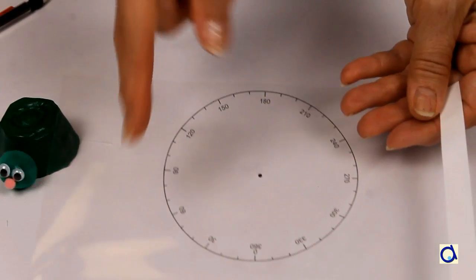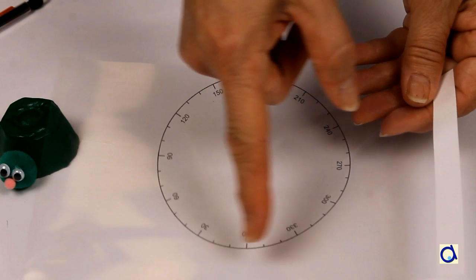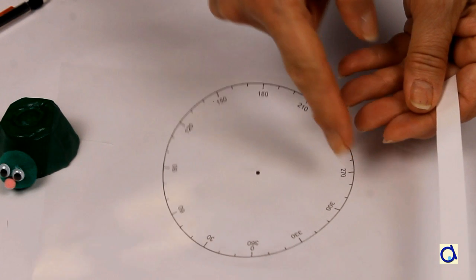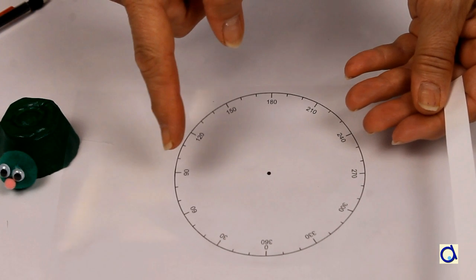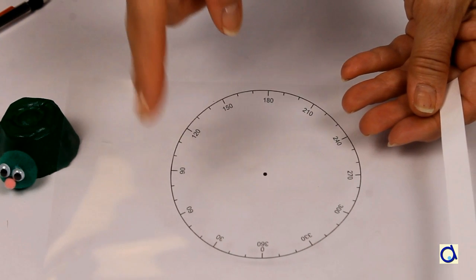In the printable document, you will also find the protractor pattern. Print or photocopy the protractor on a sheet of transparency film and cut out the circle.